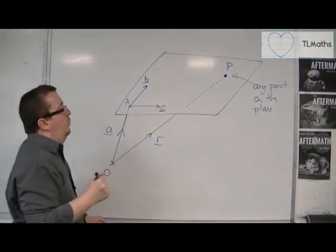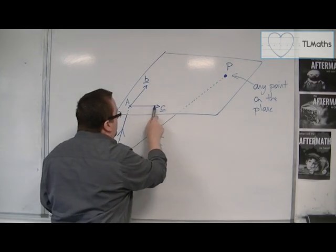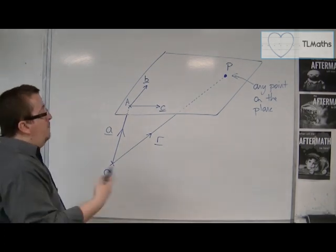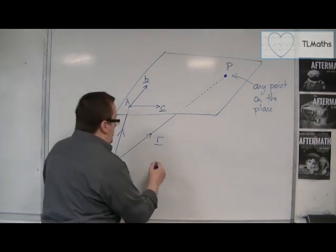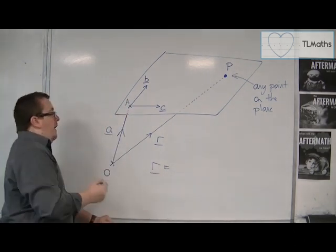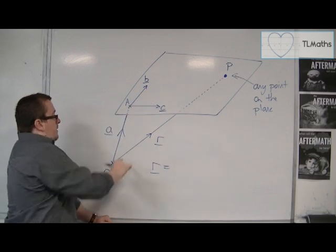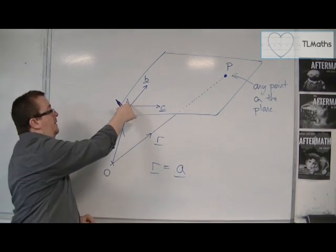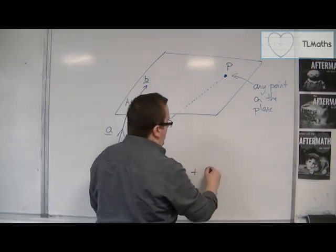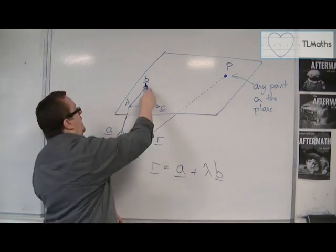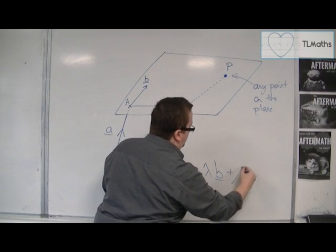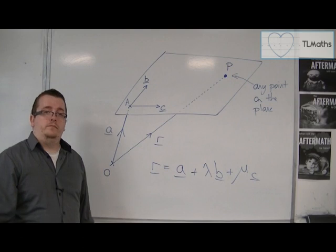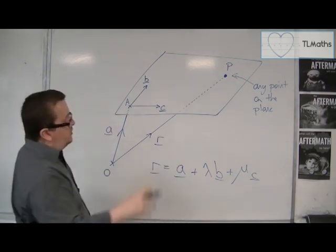all I need to know is a certain amount going in C, and a certain amount going in B, and then I can get to that point P, no matter where it is. So that means that R, I can get to any point on the plane by travelling along A. That gets me onto the plane, and then I need to go a certain amount of B, and then a certain amount of C, and that will get me anywhere that I need to go. And that is the vector equation of a plane.